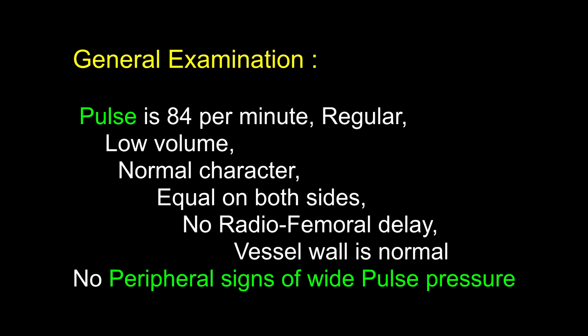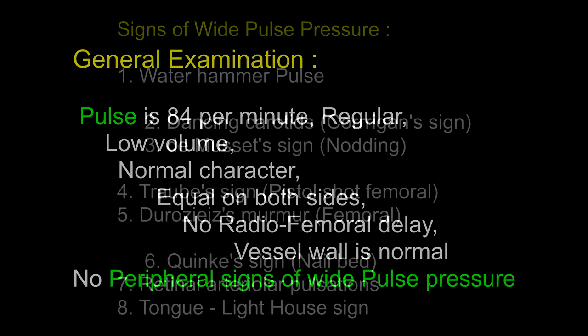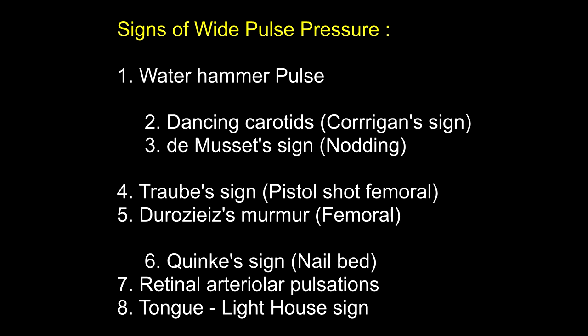There are no peripheral signs of wide pulse pressure. These signs include: water hammer or collapsing pulse; visible marked pulsations in the neck called dancing carotids or Corrigan sign; the dancing carotids may cause a to-and-fro nodding movement of the head with each heartbeat known as de Musset's sign; pistol shot sound over the femoral arteries — Traube's sign; Duroziez's murmur — a diastolic or to-and-fro murmur over the femoral arteries due to rapid forward and backward flow of blood; prominent capillary pulsations in the nail bed — Quincke's sign; retinal arteriolar pulsations seen on ophthalmoscopy; and pulsations on the undersurface of the tongue seen by pressing a glass slide over it — the lighthouse sign.